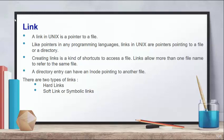A link is a kind of pointer file in Unix — like a pointer in any programming language. Links are pointers in Unix that point to files or directories. Creating a link is a kind of shortcut to access a file, and a link allows more than one file name to refer to the same file. A directory entry can have an inode pointing to another file.